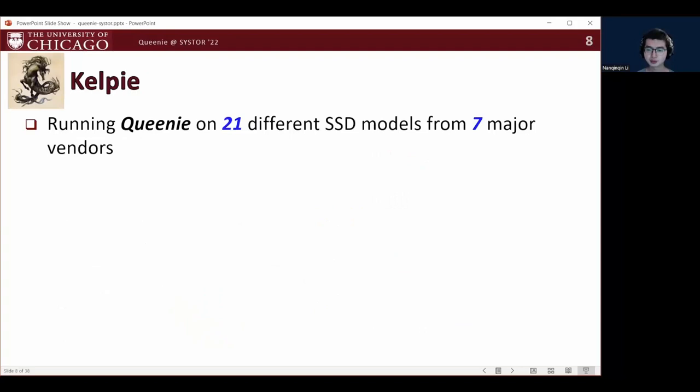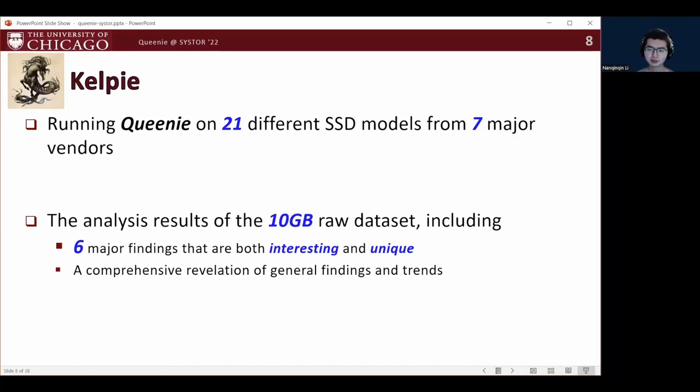By running QINI on 21 different SSD models from seven major SSD manufacturers, we are able to collect a raw dataset of 10GB. These SSD models range from 2008 to 2018, covering consumer-level SATA drives to enterprise-level NVMe drives.